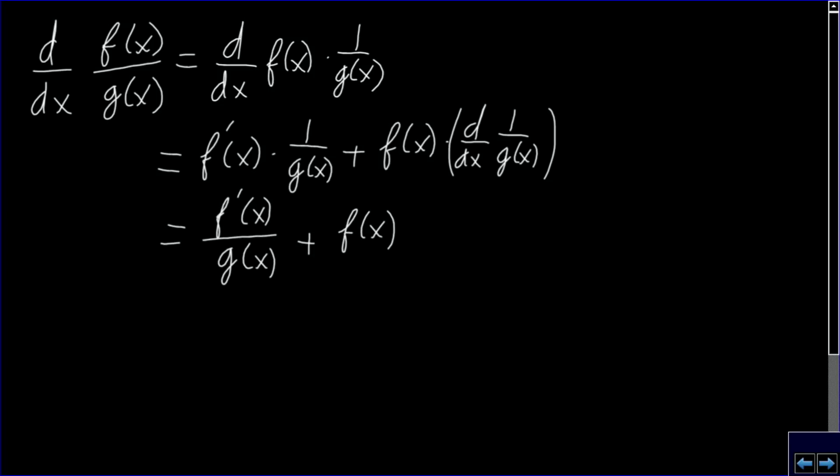And to calculate the derivative of 1 over g of x, we use the chain rule, so we need to know the derivative of 1 over x, which is the derivative of x to the minus 1, so we get minus 1 times x to the minus 2, which is minus 1 over x squared, so we get minus 1 over g of x squared times the derivative of g.